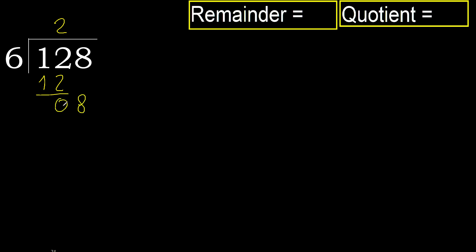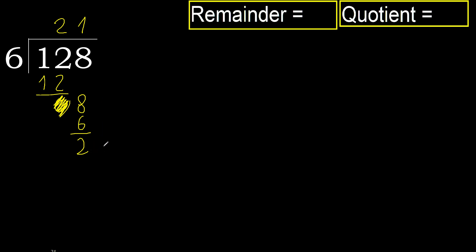Next, bring down 8. 6 multiplied by 2 is 12 — is greater. 6 multiplied by 1 is 6 — is not greater. Ok, subtract. Next, there is no more number, therefore finish.